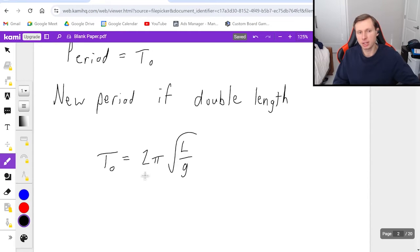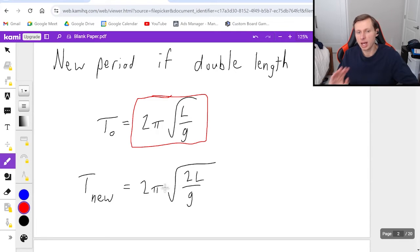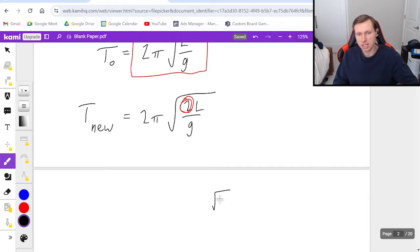Then I want to find the new period, which I'll call T new, and that's going to be 2 pi root 2 L over G, because remember, we doubled the length. Now from here, the goal is to isolate this part and write everything else off to the side. In other words, the only thing that's new here is this 2 under the square root. So I'm going to write that off to the side like this, and then in front of it, the same original 2 pi root L over G. So in other words, I just pulled the root 2 off to the side.